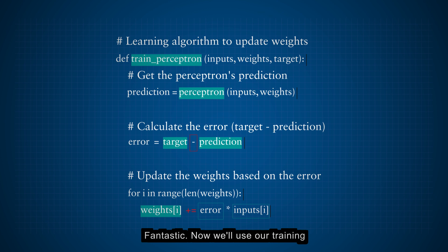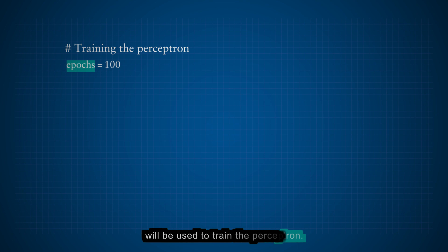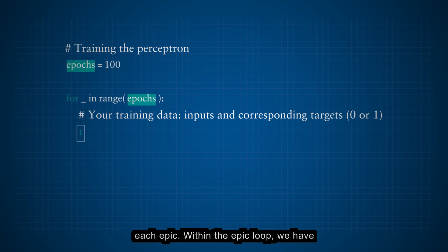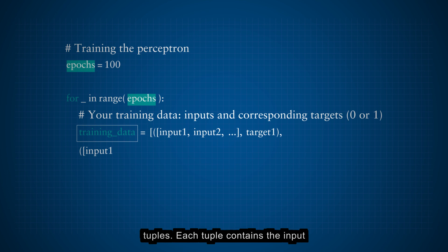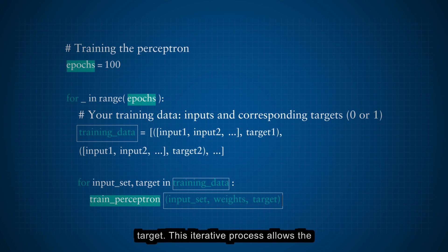Fantastic! Now, we'll use our training algorithm to teach the perceptron how to make better predictions. We define the number of epochs. Epochs represents the number of times the entire training data will be used to train the perceptron. Next, we have a loop that iterates over each epoch. Within the epoch loop, we have the training data, which is a list of tuples. Each tuple contains the input features, also called input set, and the corresponding correct output, the target. These inputs and targets represent the data used to train the perceptron. For each tuple in the training data, we call the train perceptron function to update the weights based on the inputs and the target. This iterative process allows the perceptron to adjust its weights and learn from the training data.